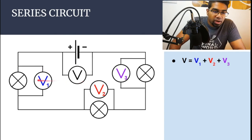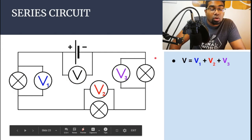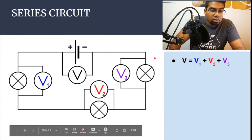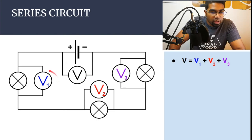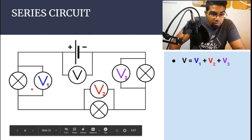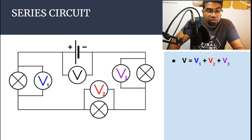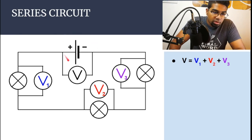In a series circuit, the total potential difference is divided among all the components. When we want to find the total potential difference, we add all the individual potential differences across each component. Everything must sum up to this total potential difference because this is the total energy supplied to the circuit — energy cannot be created or destroyed.